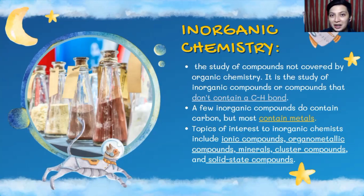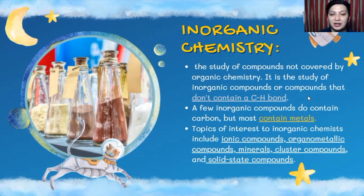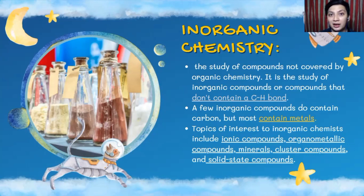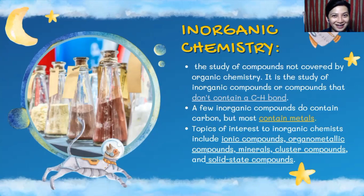Most inorganic compounds contain metals or metallic compounds. Topics of interest for inorganic chemists include ionic compounds, organometallic compounds, minerals, cluster compounds, and solid-state compounds. For example, we have diamond — diamond is an inorganic compound but is mainly composed of carbon atoms.